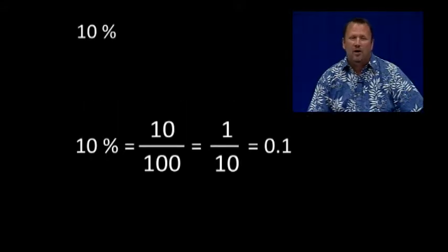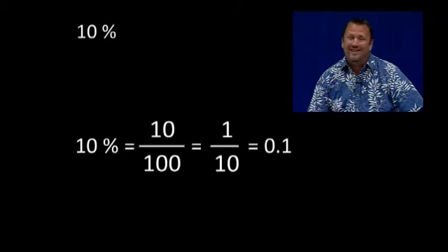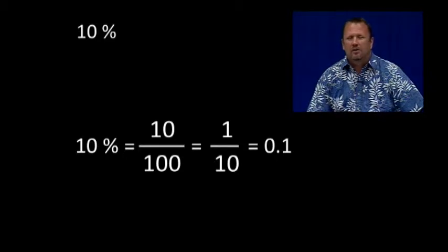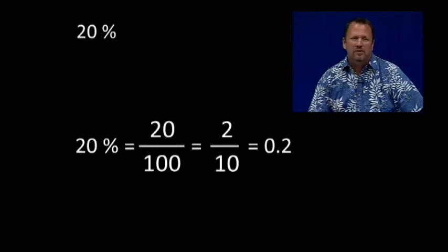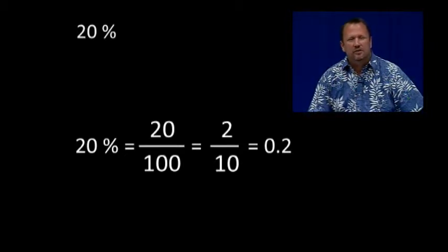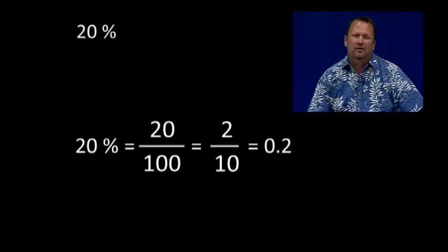10%, which is 10 one-hundredths, is equal to 1 tenth, which is equal to 0.1. 20% is equal to 20 hundredths, which is equal to 2 tenths, which is equal to 0.2.